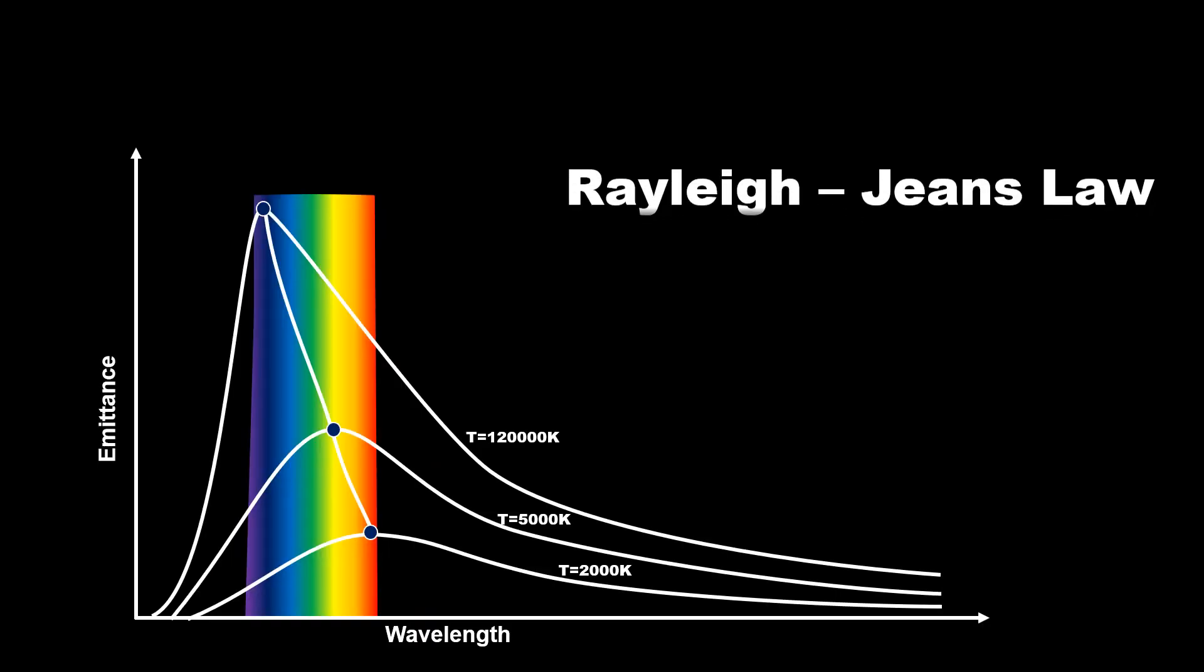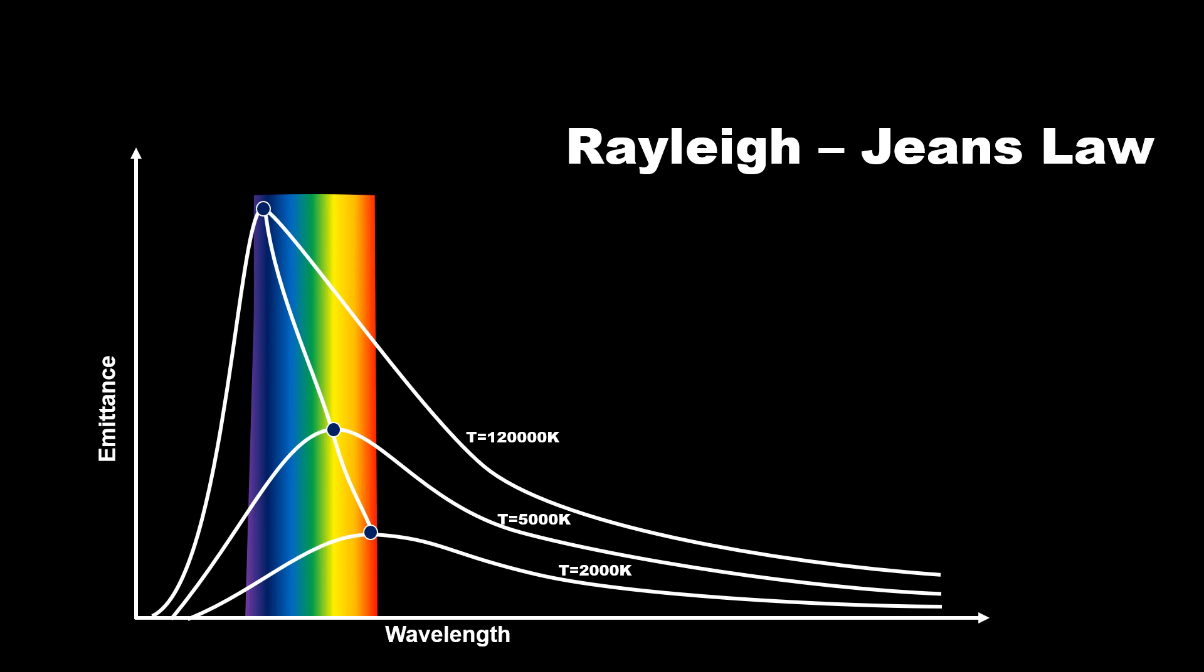With the help of classical mechanics, Rayleigh and Jeans also tried to explain the blackbody radiation curve. But this law also failed. In the next video of quantum mechanics, we will learn about Rayleigh-Jeans law and understand why this law cannot explain the radiation curve.